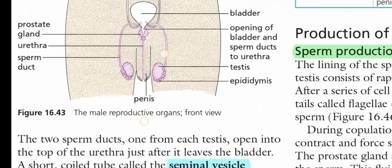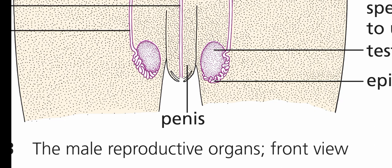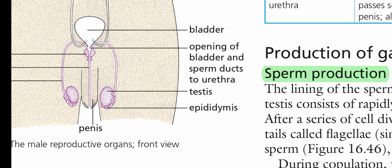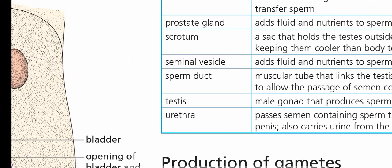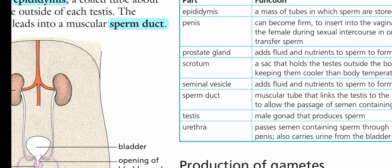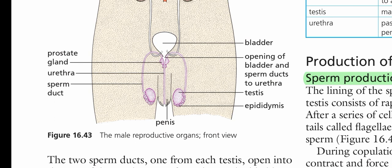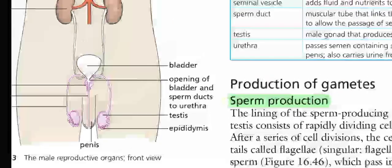The scrotum is a sac that protects the testes outside the body, because spermatogenesis takes place at 36°C. The penis consists of connective tissue and blood spaces, giving it the ability to become erect and hard. During sexual intercourse, it is a hardened structure that deposits sperm at the vagina.